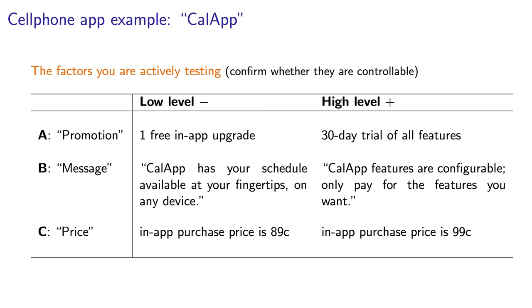The factors that you consider might be, for example, factor A is whether you provide a single free in-app upgrade for one of the features, or at the plus level, you provide a 30-day trial for all the features. Factor B might be that the sales message is, this app has your schedule available at your fingertips on any device. Or the alternative message, CalApp features are configurable. Only pay for the features you want. Factor C might be, the price for in-app purchases is 89 cents per feature. Or at the plus level, the price might be 99 cents per feature.